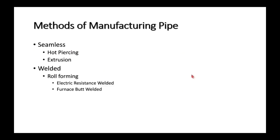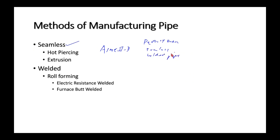Pipe manufacture methods: when we look up a piping specification in ASME 2D, one of the columns is 'product form,' which might say seamless pipe or welded pipe. Both types exist. We'll look at hot piercing, extrusion, roll forming, ERW, and furnace butt welded. Your textbook covers a few more, but these are the main manufacturing methods.